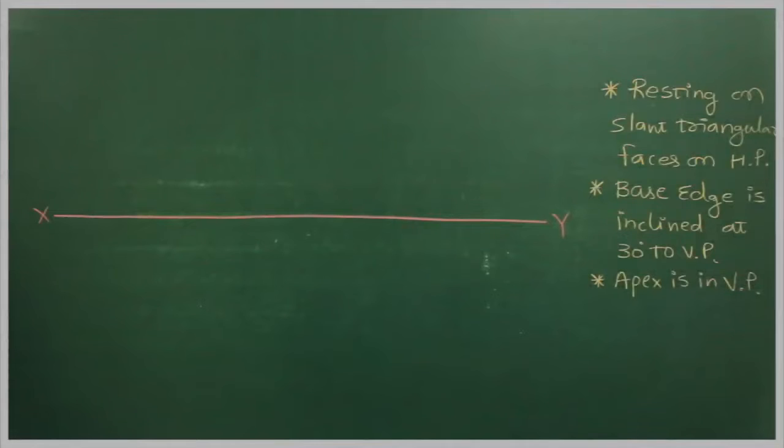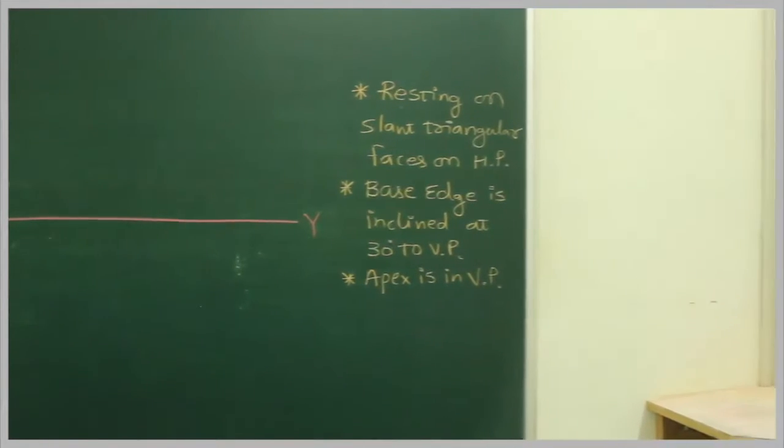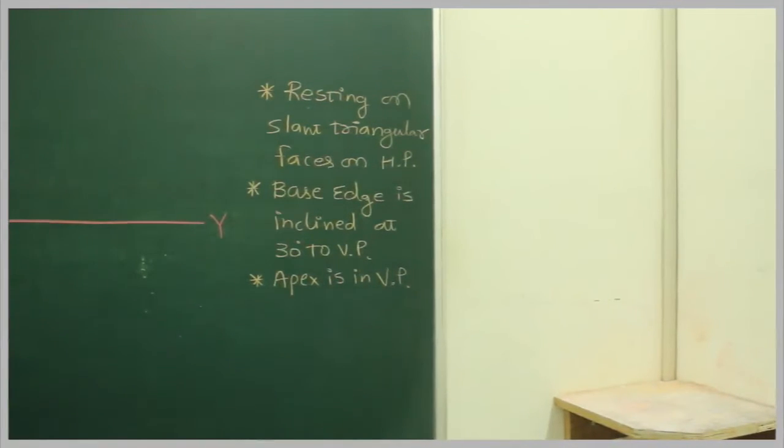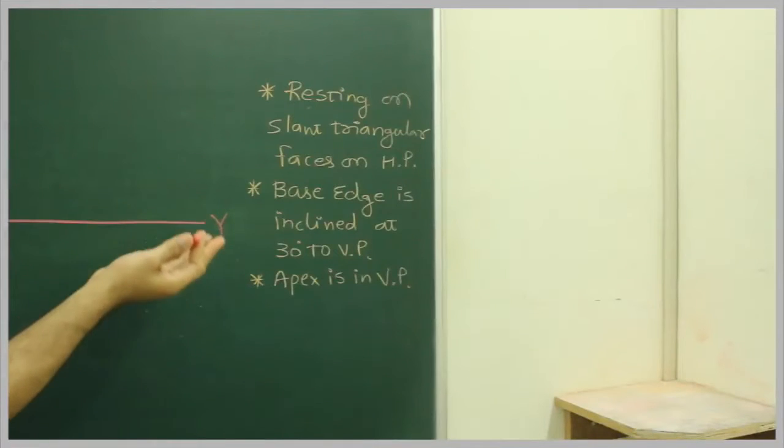In this sum, a square pyramid is resting on one of its slant triangular faces on HP. The base edge is inclined 30 degrees to VP and apex is in VP. So if you see, it is resting on one of its flat triangular faces on horizontal plane.